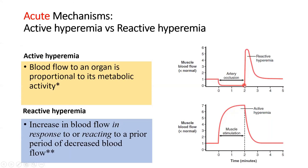As soon as the occlusion is released, blood flow goes up sharply, stays elevated, pays all the oxygen and nutrient debt, then naturally comes down to the normal blood flow pattern. This is the key difference between active and reactive hyperemia. Reactive hyperemia is not just an academic concept - it has very important clinical consequences.